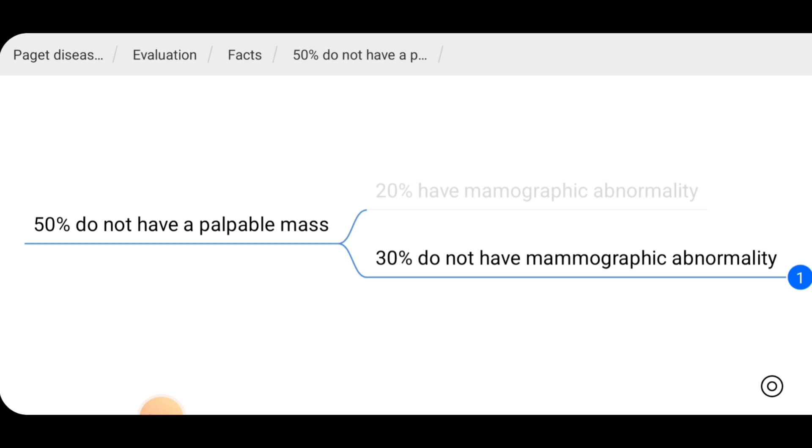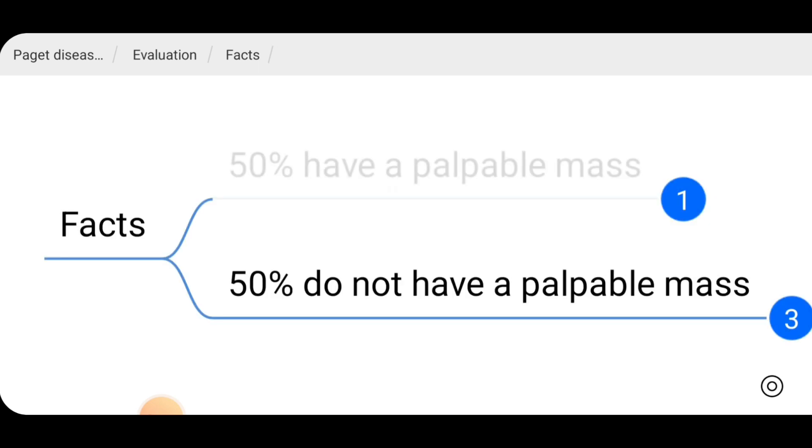25% have occult ductal carcinoma in situ. Most commonly, Paget's disease occurs with underlying breast carcinoma either invasive or non-invasive breast carcinoma.